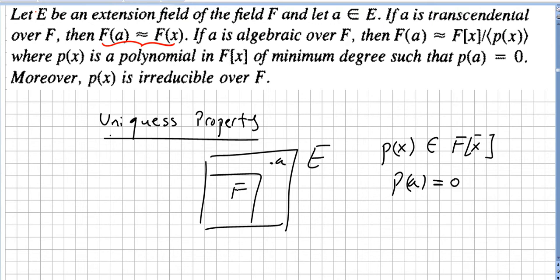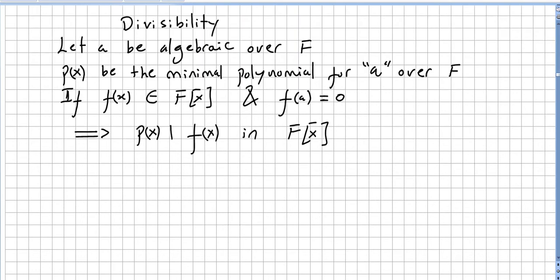If a is algebraic over F, so a will be a zero in the ring of polynomials over a field F, there will be a unique monic and irreducible polynomial p(x) such that p(a) equals zero.